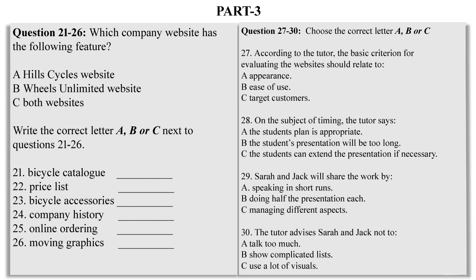Before you hear the rest of the talk, you have some time to look at questions 27 to 30. Now listen and answer questions 27 to 30. We thought we'd use three criteria. How attractive each website is, how user-friendly it is, and how closely it targets its potential customers. Do you think that's OK? Sounds fine. But I'd look at the criteria in a different order if I were you. Because really you've got to look at attractiveness and user-friendliness in relation to the people the website is aiming at. So I'd deal with that criterion first, if I were you. Right.